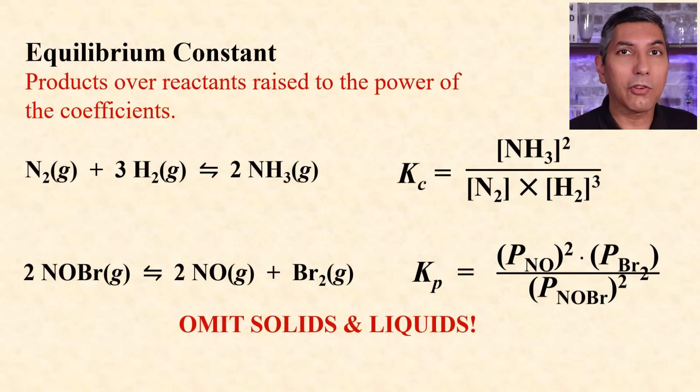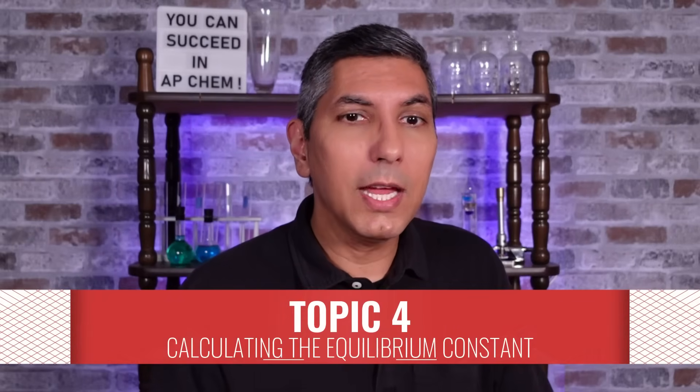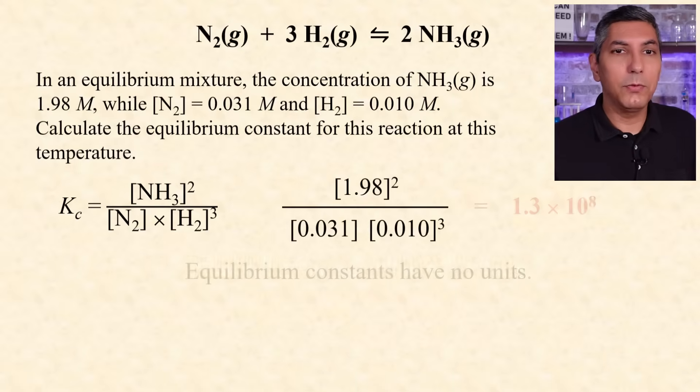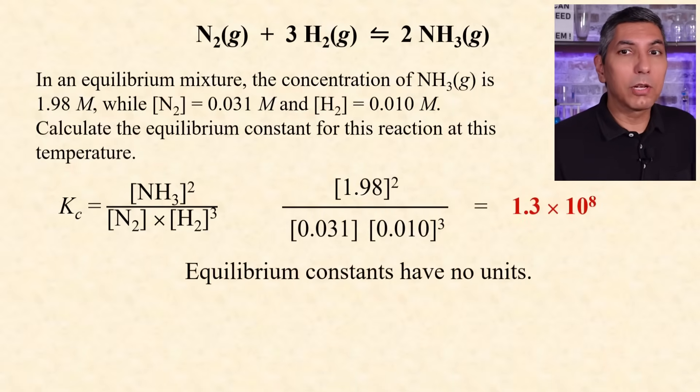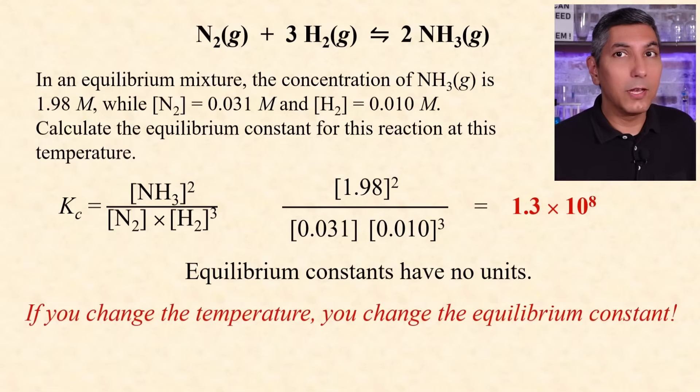Be aware that the reaction quotient, Q, is written the same way as the equilibrium constant, but it includes values that aren't necessarily at equilibrium. To calculate the equilibrium constant, plug in the equilibrium concentrations into the expression and compute the answer. Likewise, if you know the equilibrium constant and all but one of the equilibrium concentrations, you can solve for the missing value. This process works the same for Kc as it does for Kp. Remember that all equilibrium constants are temperature dependent. That means that if you change the temperature, you change the equilibrium constant. In fact, changing the temperature is the only way you can change the value of the equilibrium constant.